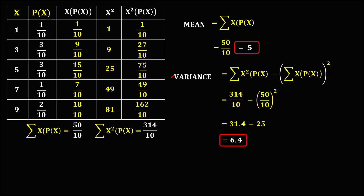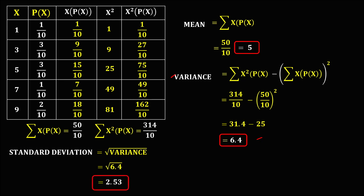Since we now have the variance, we can find the standard deviation, which is just the square root of the variance. Since the variance is 6.4, the standard deviation is the square root of 6.4, which equals approximately 2.53. This is how to find the mean, the variance, and the standard deviation for a discrete probability distribution.